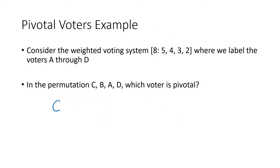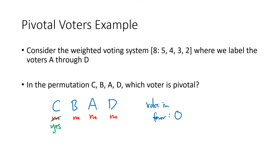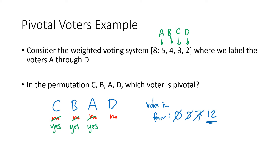Let's try another permutation: C, B, A, D. We start with everybody voting no and start flipping. C flips to yes — that's three votes in favor, not enough since our quota is eight. B goes from no to yes — three plus four is seven votes in favor, still not enough. Now A's vote flips from no to yes — three plus four plus five is 12 votes in favor. That's more than enough, so A was the pivotal voter. The first time the vote goes from not passing to passing, that voter you just flipped is the pivotal voter.